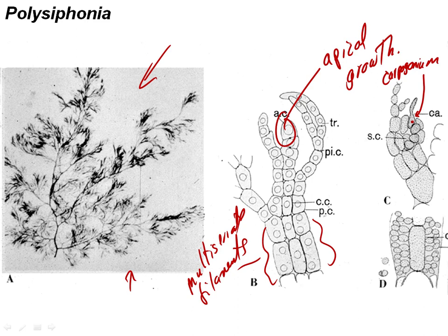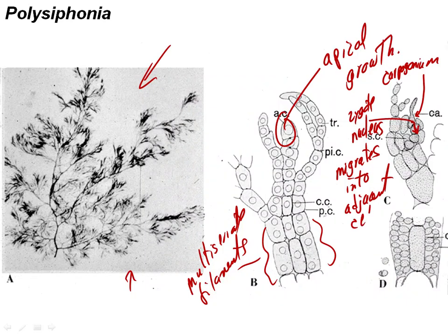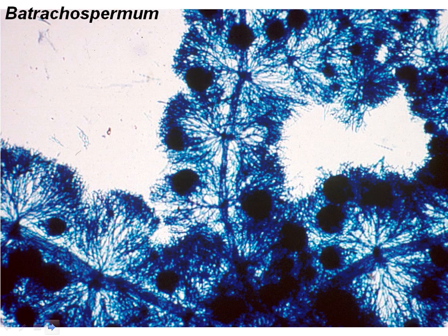Here's the carpogonium. You can see the trichogyne there. The carpogonium is closely associated with some cells right next to it. After the zygote nucleus is formed, it's going to migrate into these adjacent cells — the carposporophyte arises from those adjacent cells, not from the carpogonium itself. In these complex red algae, there are holes in the cell walls, so the nucleus can actually move through the cell wall.